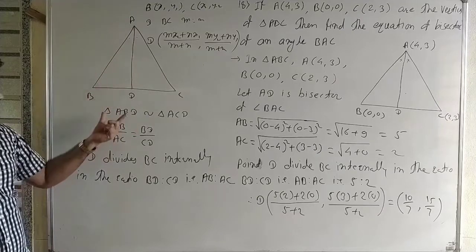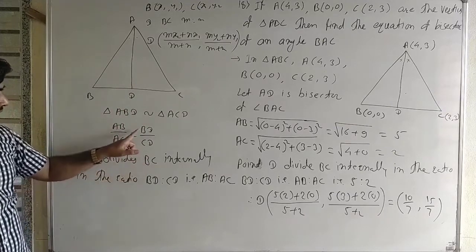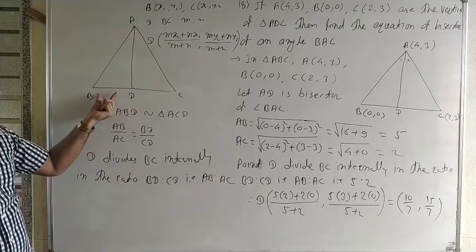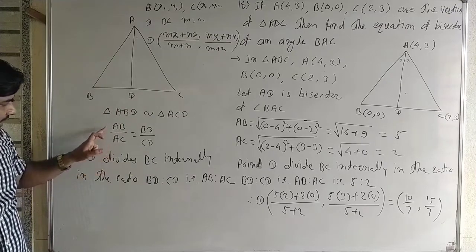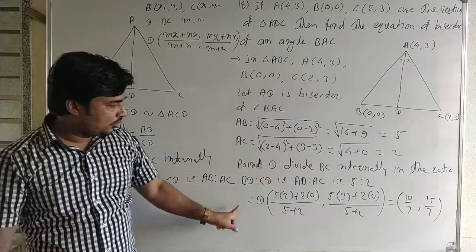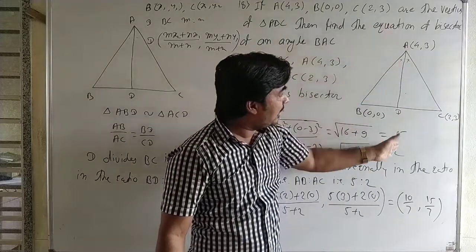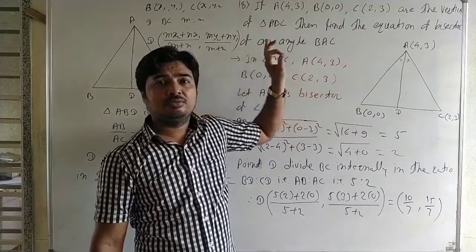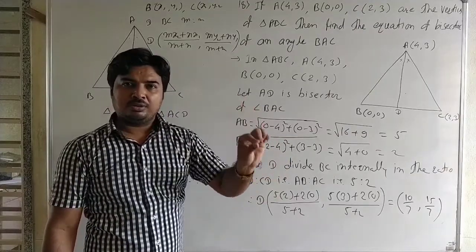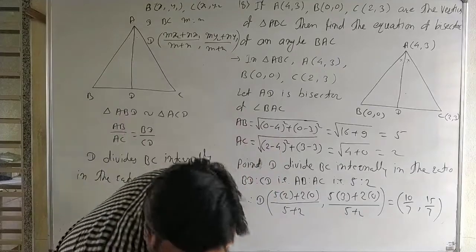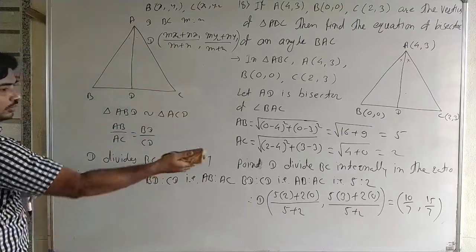The coordinates of point D are (10/7, 15/7) by using the section formula and the angle bisector theorem — since the two triangles are similar, BD:DC = AB:AC = 5:2. Now we know points A and D, and we find the equation of the line AD using the two-point form: (x − x₁)/(x₂ − x₁) = (y − y₁)/(y₂ − y₁).